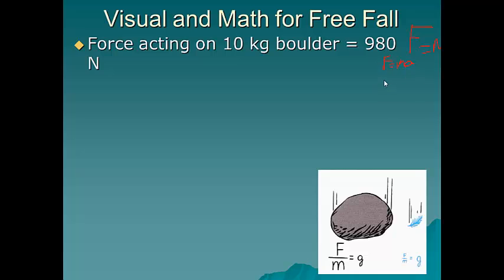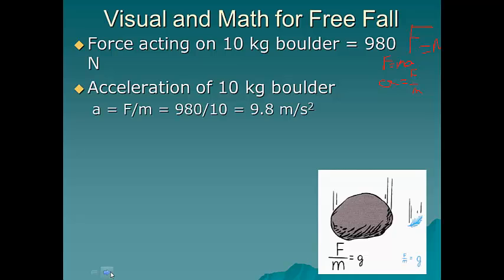If we solve that for a, we know that a is equal to f over m. So the acceleration of a 10 kilogram boulder will be a equals f over m equals 98 divided by 10 equals 9.8 meters per second squared.